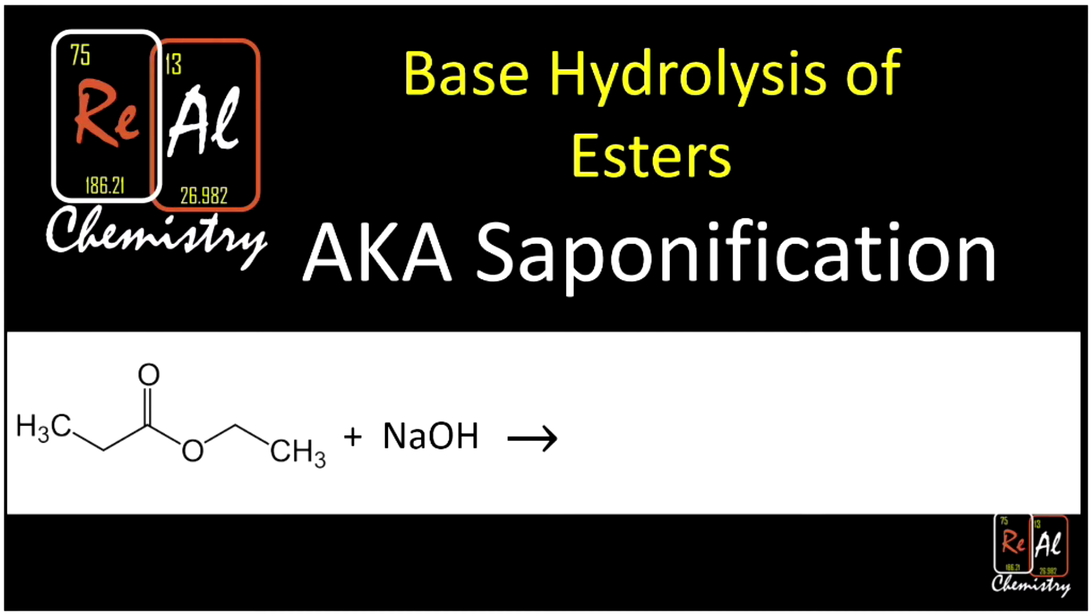What is up, my friends? Today we're talking about the base hydrolysis of esters. Hydrolysis means that we're splitting apart our ester, and we're going to do that with a base. We could use sodium hydroxide, lithium hydroxide, or potassium hydroxide, basically the same base as you saw in the neutralization of carboxylic acids.